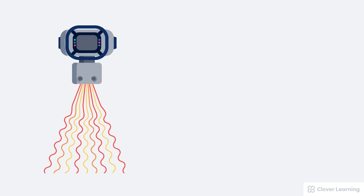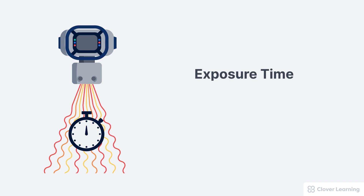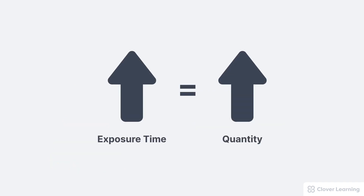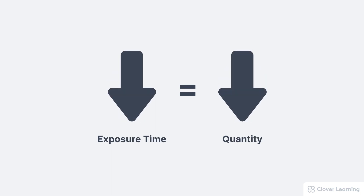Another factor affecting beam quantity or intensity is the exposure time. Exposure time simply refers to the total amount of time that electrons are flowing in the tube and x-rays are being created. The longer the tube stays on, the more total x-rays are produced. Like the MA, exposure time plays a major role in controlling the total number of photons. As we increase the exposure time, this increases the quantity or total intensity of the x-ray beam. Decreasing the exposure time results in decreased beam quantity or intensity.